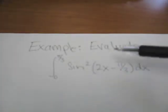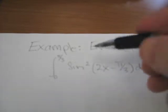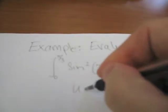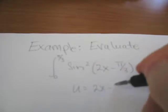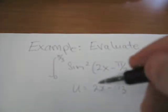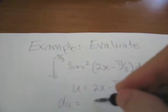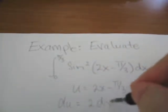It seems apparent that the best thing to do is to introduce a dummy variable here for 2x minus π/3. So we'll do that first. We'll say u is equal to 2x minus π/3. Therefore, du in differential form is going to be 2dx.